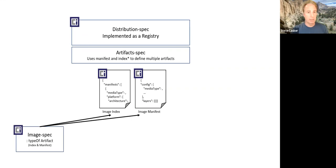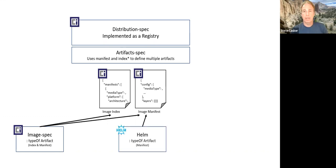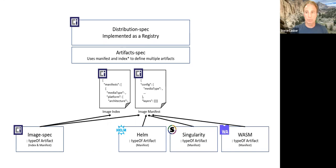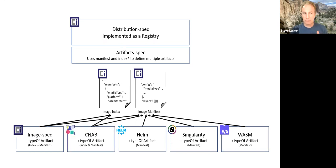If we think about where we've gone with the artifact spec, we have an image index and an image manifest in the image spec. An image can be a type of artifact, either an index or a manifest. There's a collection of manifests for multi-arch. A Helm chart is a type of manifest, as well as Singularity and WASM. We still have the CNAB thing floating out there as a bit of an anomaly. And of course we have our OPA friends.